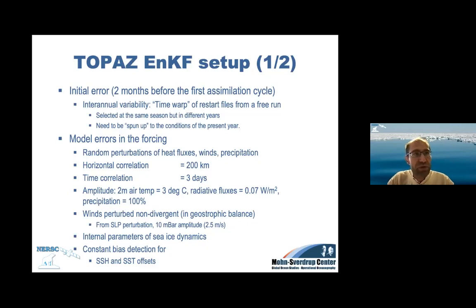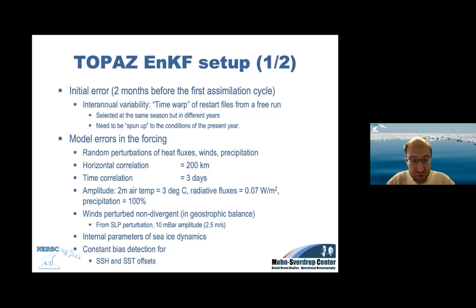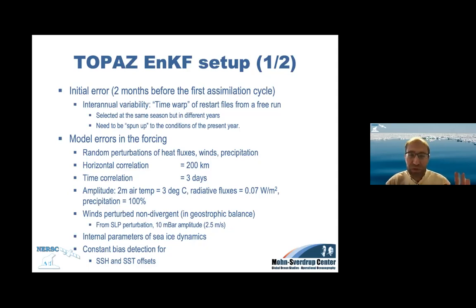The model accumulates errors as it spins up and drifts away from reality. If you don't account for these drifting errors, you obtain errors that are too large to correct — you want the ensemble to encompass reality. A better way is to incorporate what we call interannual variability: the change from year to year across different simulations serves as the estimate of initial-time errors. We run a long free run, take restart times at the same season but in different years, and time-warp them to the initialization time, changing the timestamp on the fields.